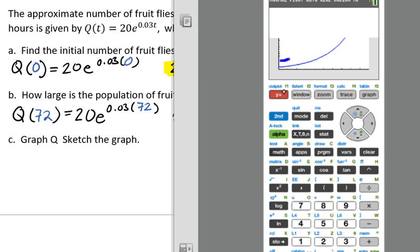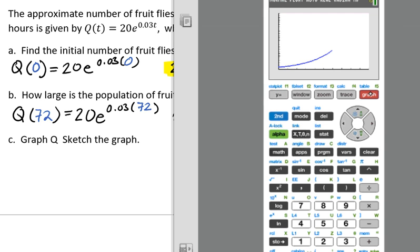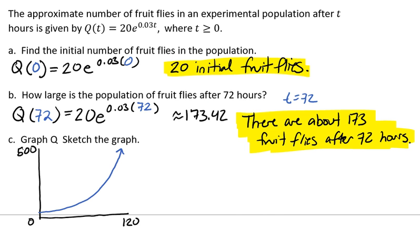I think I have something left over here. Looks like my stat plot is on, so let's turn that off. There we go. We'll graph it. All right, so let's go ahead and sketch that. Notice that right here it doesn't start at zero, because initially there weren't zero flies. There were 20 flies.